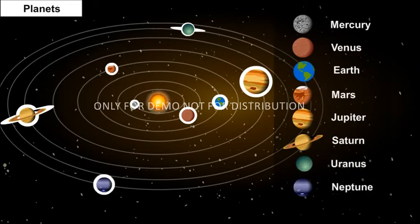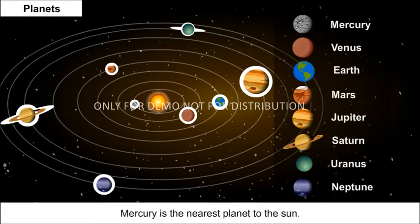All the eight planets of the solar system move around the Sun in fixed paths called orbits. Mercury is the nearest planet to the Sun.